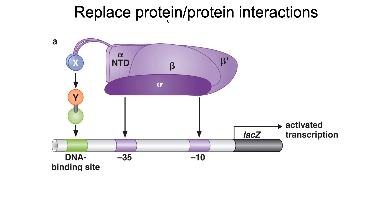They genetically engineered an RNA polymerase that instead of having the alpha carboxy terminal domain, it has protein X. Then they replaced CAP with another protein Y, which they know sticks to X. They also replaced the CAP binding site with a new DNA binding site that Y binds to. They've completely replaced all of this with components where the interaction is nothing more than sticking together with no allostery involved. And sure enough, it works.